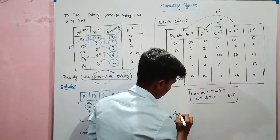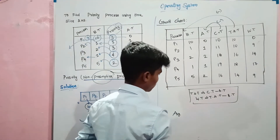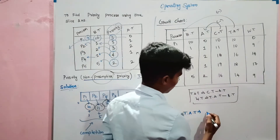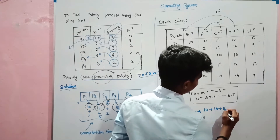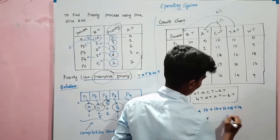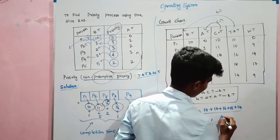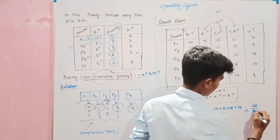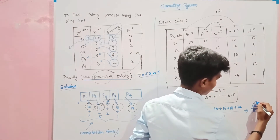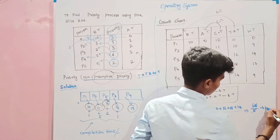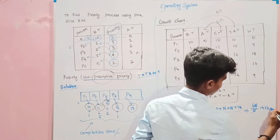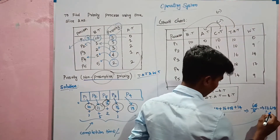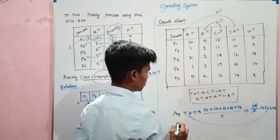Now go average for turnaround time. Sum of all values: 10 plus 10 plus 16 plus 18 plus 14, divided by number of values 5. That gives 68 divided by 5 equals 13.6 milliseconds. Average turnaround time is 13.6 milliseconds.